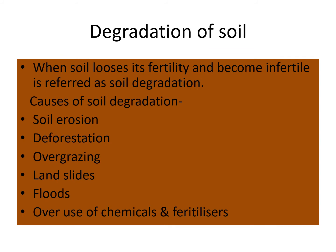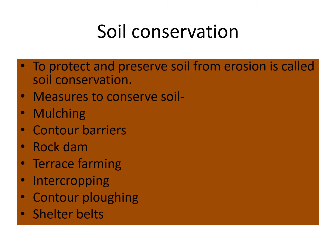Degradation of soil: when soil loses its fertility and becomes infertile, it is referred to as soil degradation. Causes are similar to land degradation — soil erosion, deforestation, overgrazing, landslides, floods and overuse of chemicals and fertilizers. To protect soil from erosion, there are methods such as mulching, contour barriers, rock dam, terrace farming, intercropping, contour ploughing, shelter belts and afforestation.